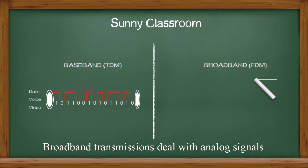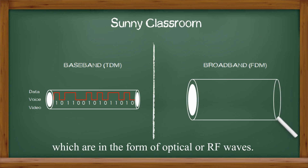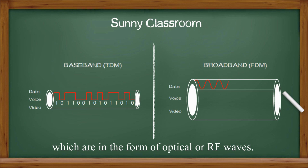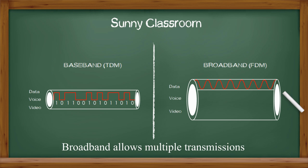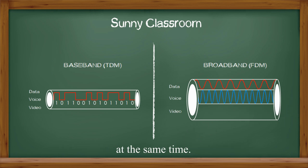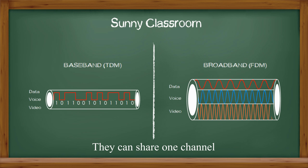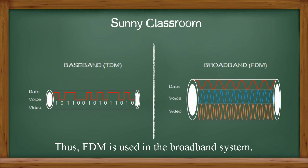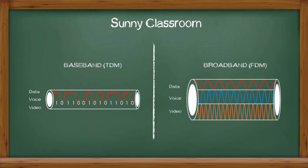Broadband transmissions deal with analog signals, which are in the form of optical or radio frequency waves. Broadband allows multiple transmissions at the same time — they can share one channel by using different frequency ranges. Thus, FDM is used in broadband systems.